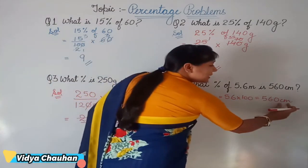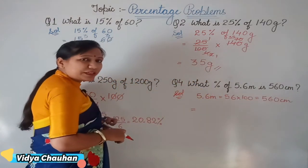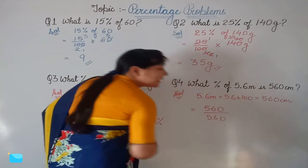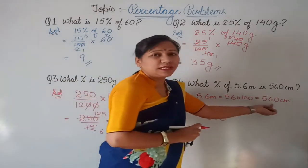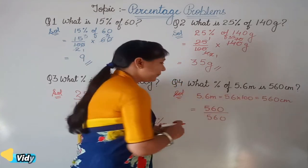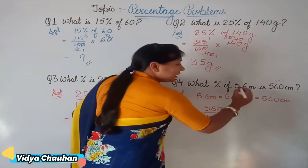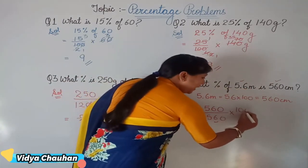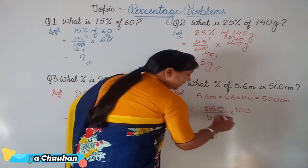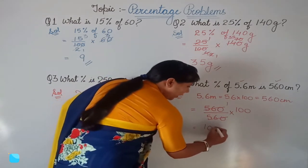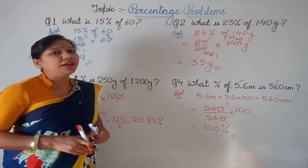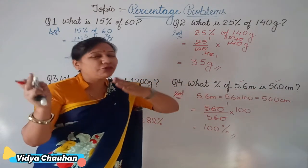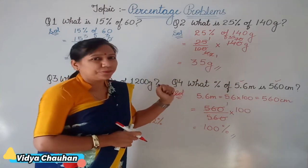Now find the percentage: 560 centimeters cut out from 560 centimeters. The 560 in the denominator is the converted value of 5.6 meters. Multiplying by 100 to get the percentage, 560 upon 560 equals 1, so the answer is 100 percent. Cutting 560 centimeters from 5.6 meters means we have taken out 100 percent of the cloth piece.